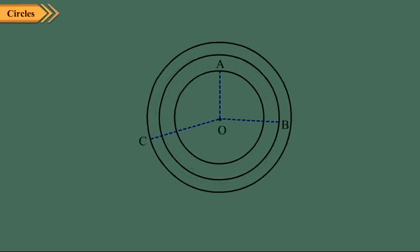Circles having the same center but different radii are called concentric circles. In the figure, the three circles have the same center O but different radii OA, OB and OC. So, these are concentric circles.